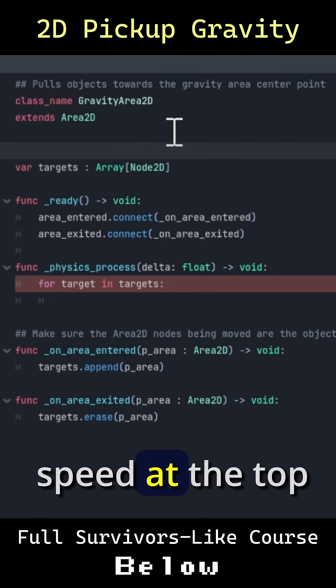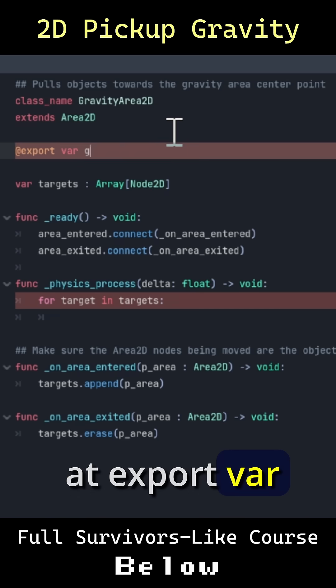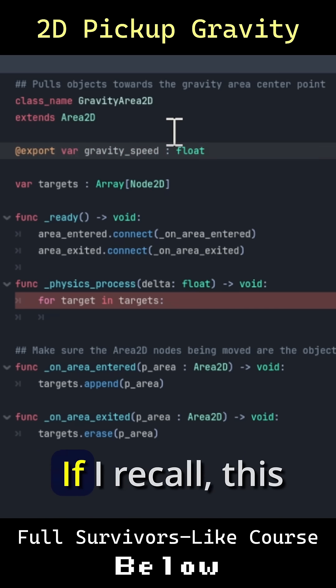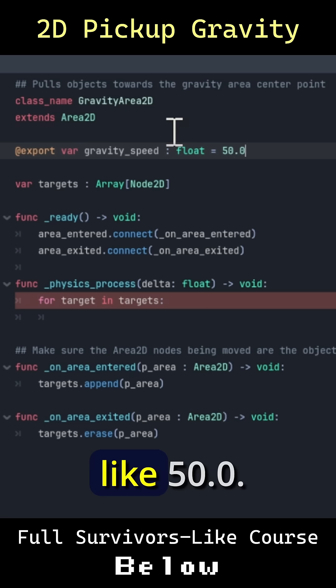So we need a speed at the top. @export var gravity_speed: float. If I recall this is going to come out to like pixels per second, so I'll try something like 50.0.